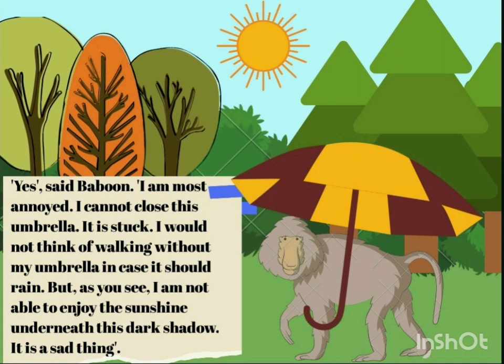Baboon is also saying that he can't think of walking without his umbrella, because he was worried — what if it starts raining? An umbrella protects us against the rain or the scorching sun. That is why Baboon was carrying an umbrella. But the problem was that he was not able to enjoy the sunshine underneath this dark shadow. It is a sad thing.